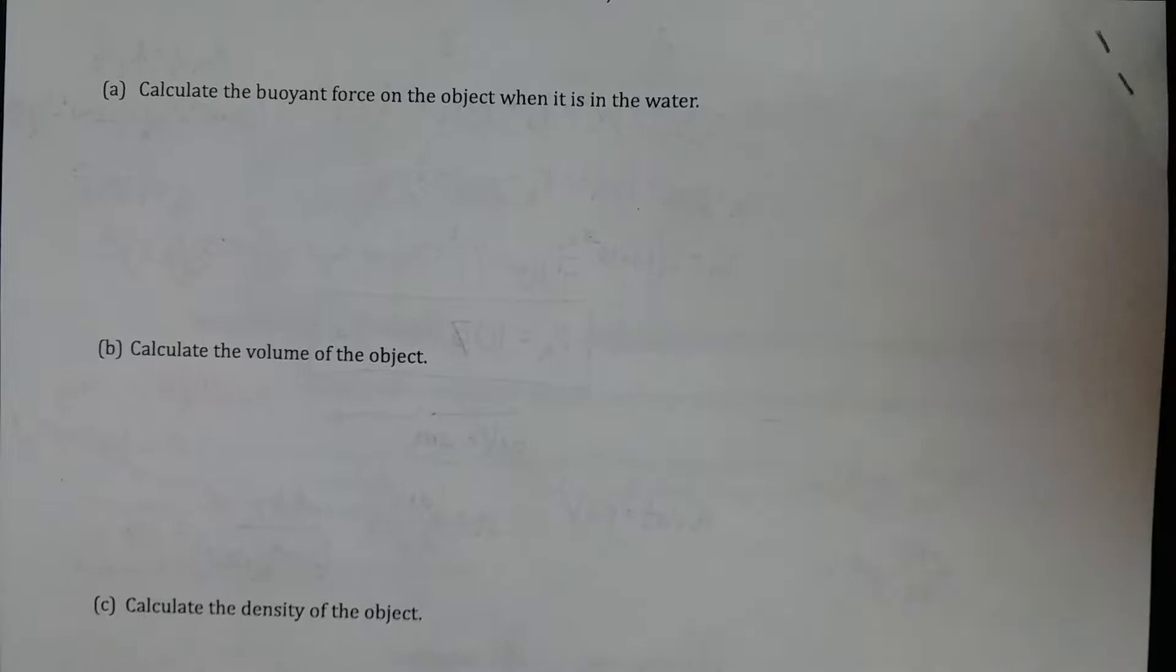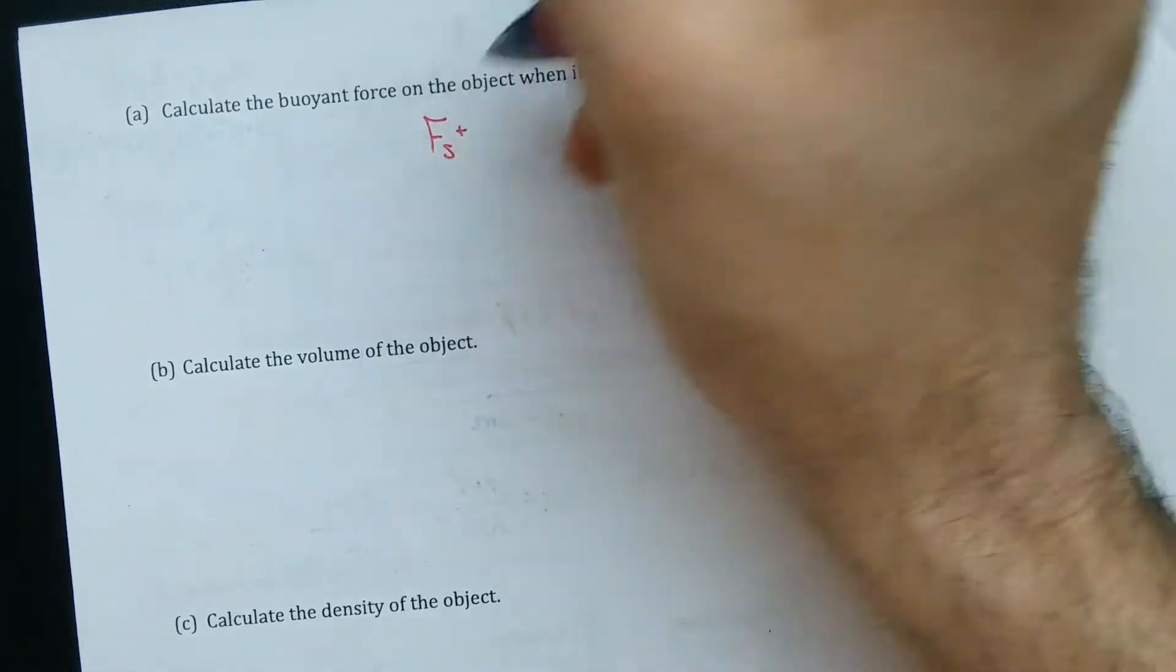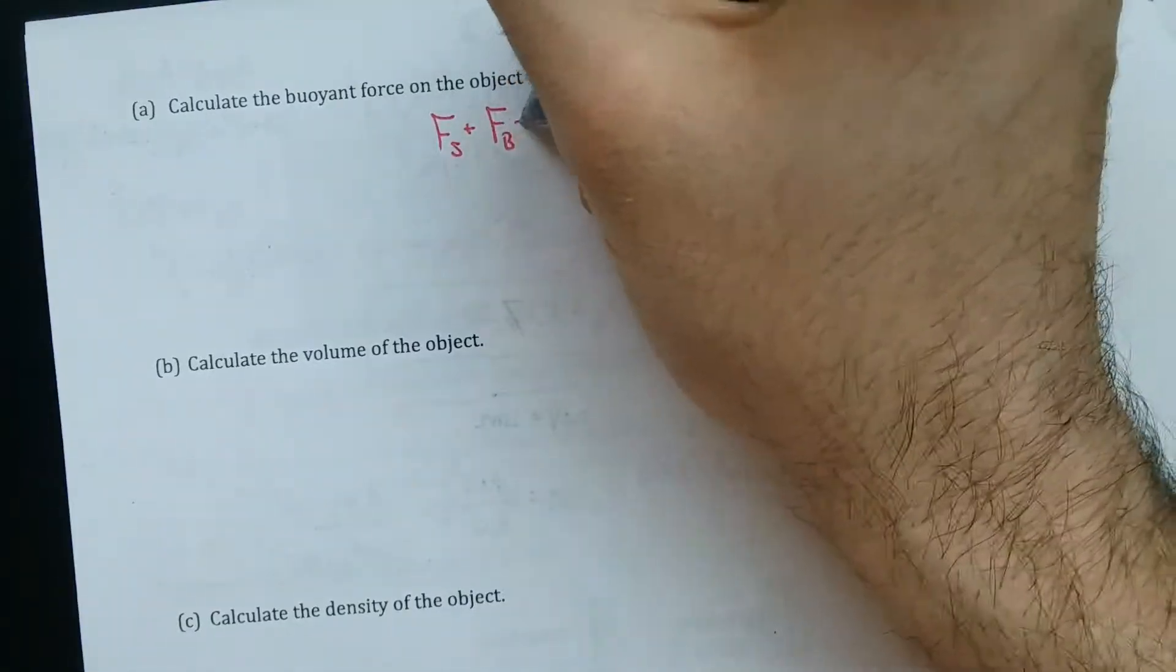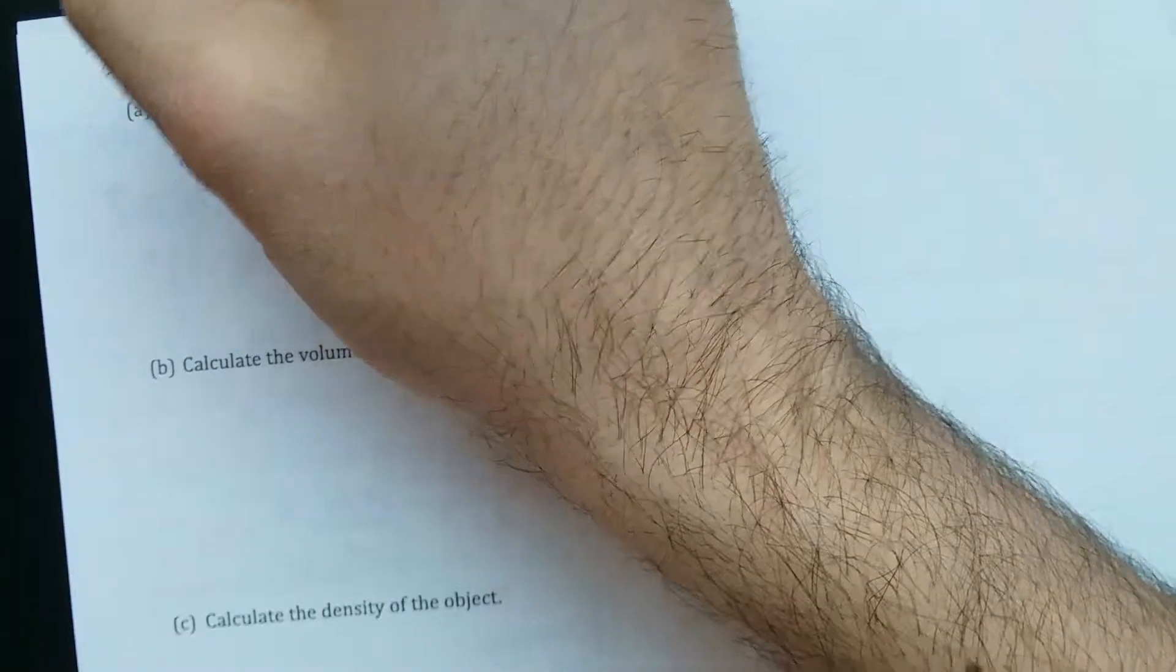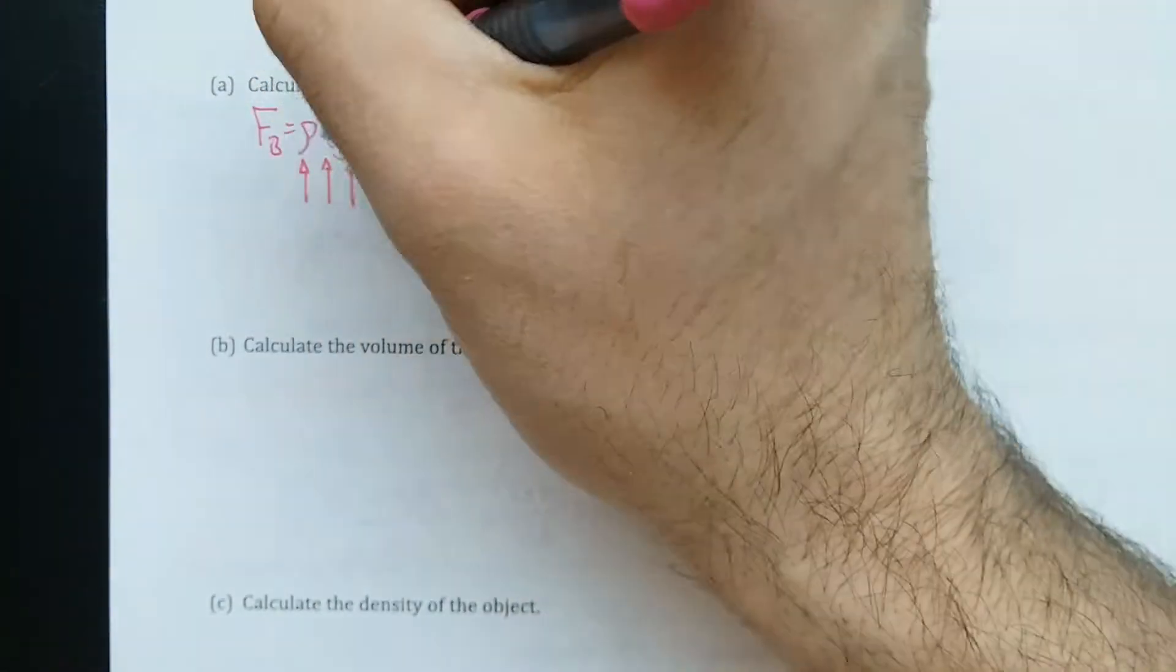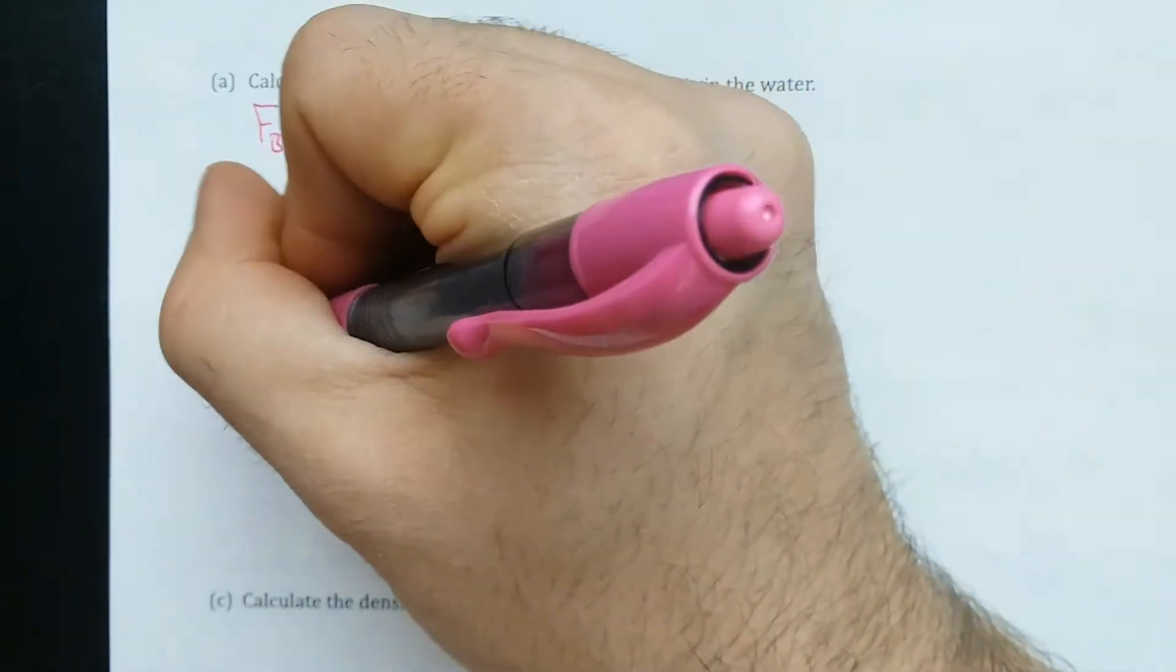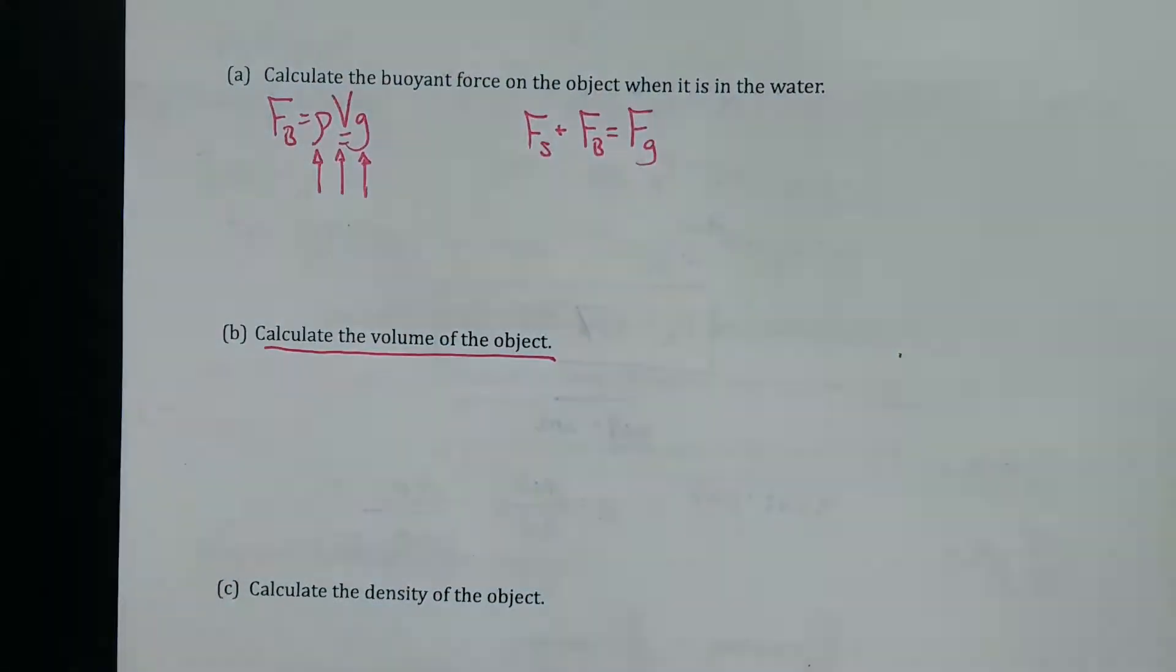Part A, calculate the buoyant force on the object when it's in the water. So we already said that the force of the spring in the water plus the buoyant force equals the gravitational force. And maybe you tried to do this first, rho Vg. And that's fine to start there. But the problem is we don't know the volume of the object. We don't know the volume displaced. That's what part B is asking for here. So this is always going to be a dead end.